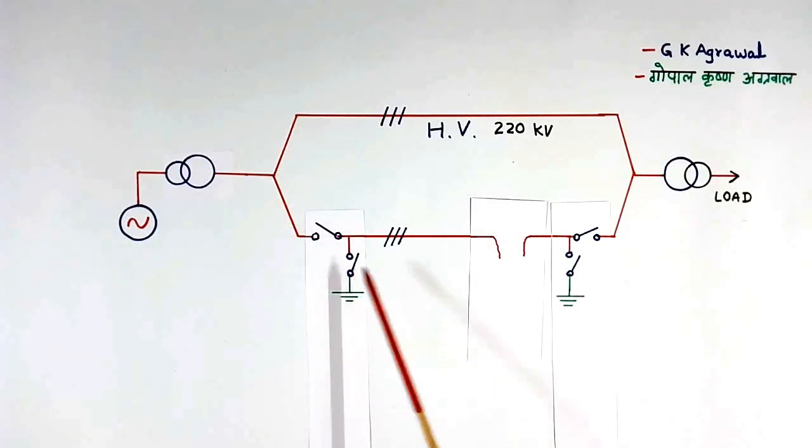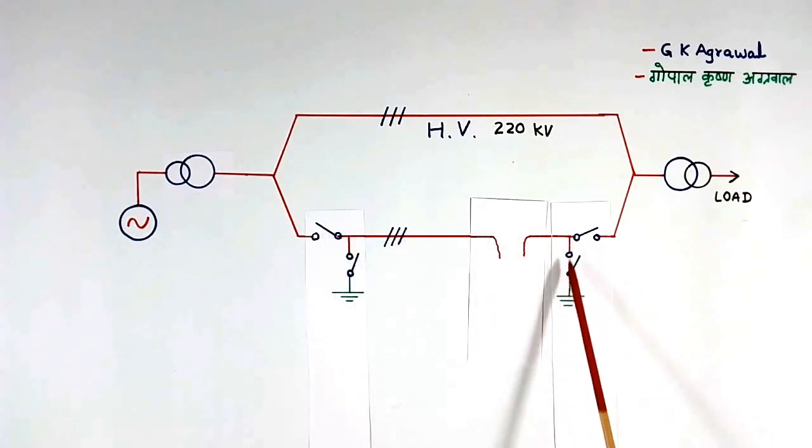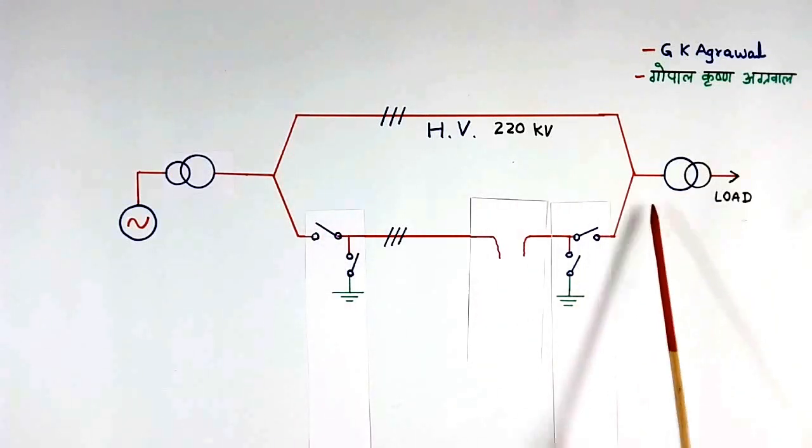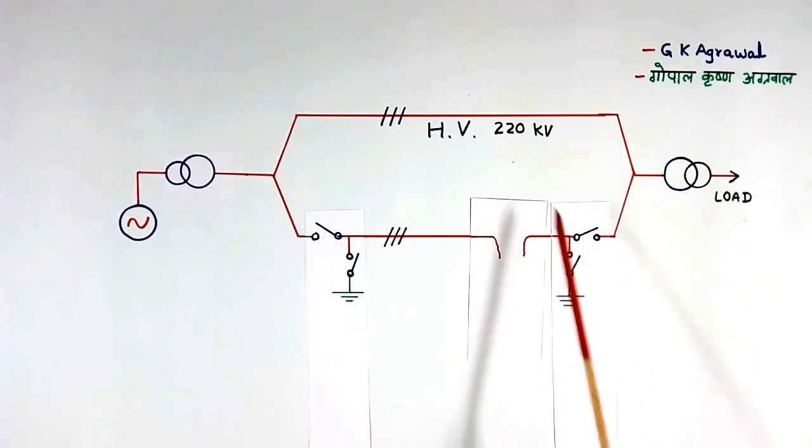Afterward, using these two isolators, we will ground this. We will close this isolator. This is earth. Green color is earth. So this line and this line is grounded and isolated from high voltage. Now this line can be repaired.